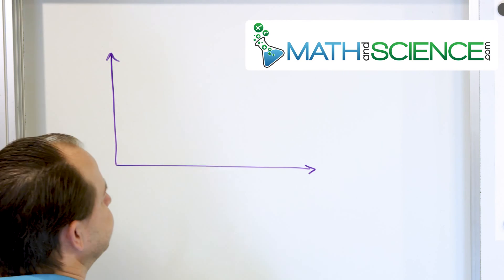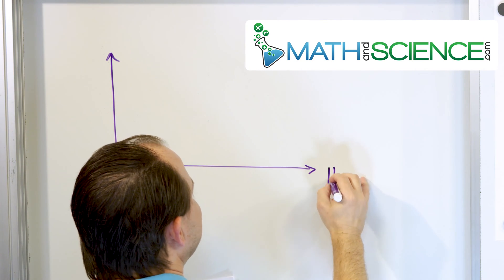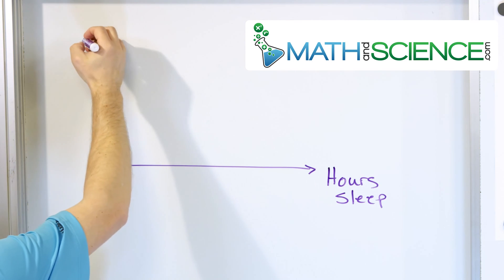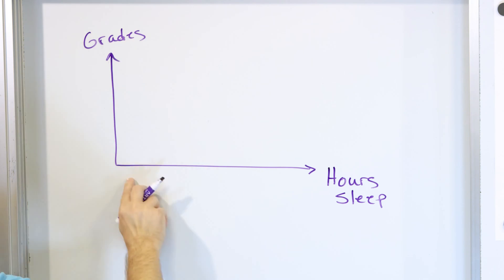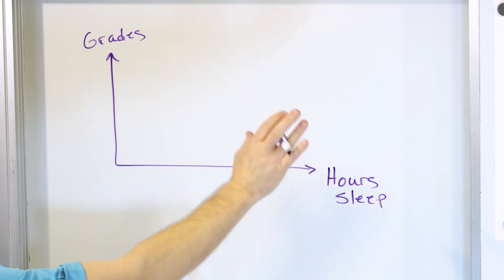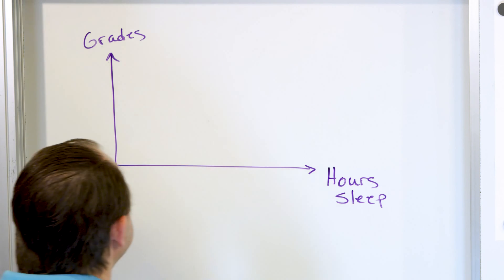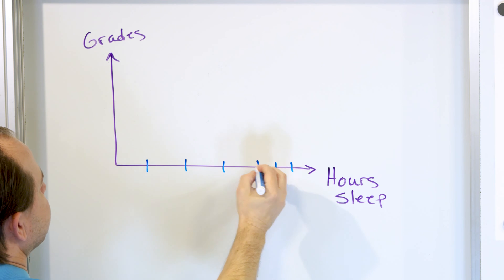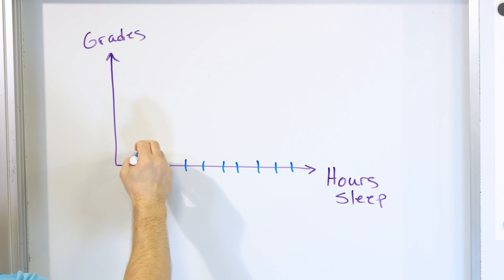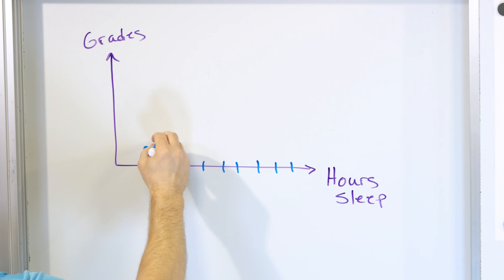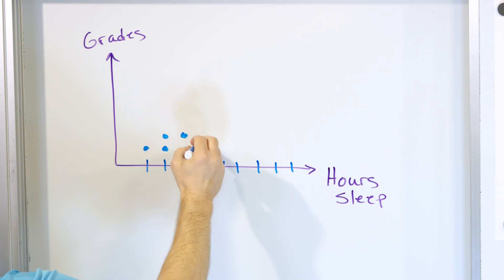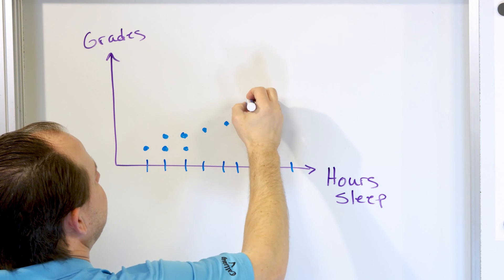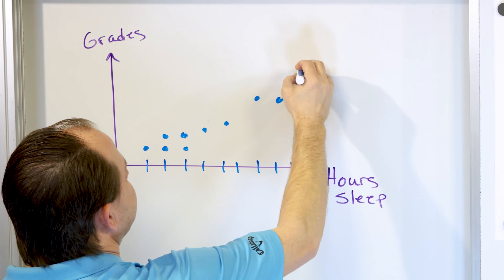On the x-axis here we could call it hours of sleep, and on the y-axis we could call it grades. The numbers don't matter, so I'm not even going to put any numbers. But let's say that in general, the people that get a smaller amount of hours of sleep, like down here somewhere, they have lower grades. Each little data point is somebody with lower grades. But then as they get more sleep, grades seem to go in general in the up direction.